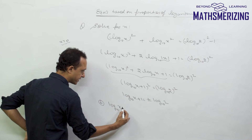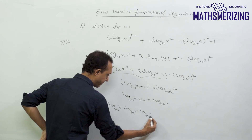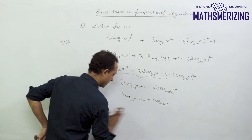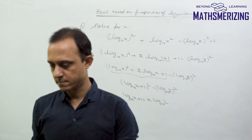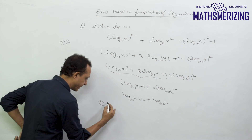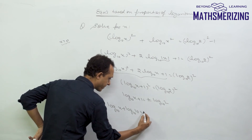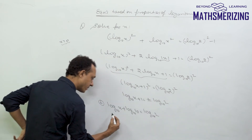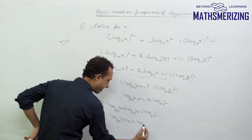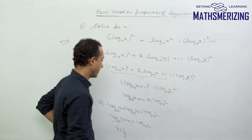Taking the plus sign, I can write log x (base 10) + log 10 (base 10) equals log 2 (base 10), so log(10x) equals log 2. Cancelling the logs gives 10x = 2, so x equals 1 by 5.